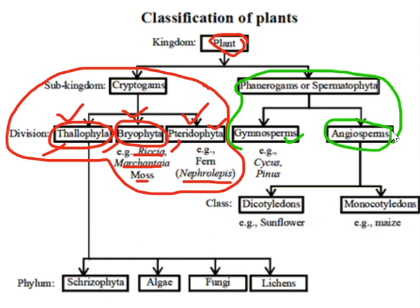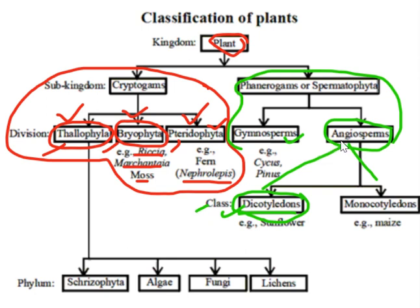Angiosperms are further divided into Dicots and Monocots. For Dicots, plants belonging to this group bear seeds with two cotyledons, the leaves have reticulate venation, and a tap root system. Examples include sunflower, pea, potato, apple, and rose.